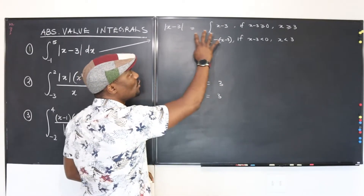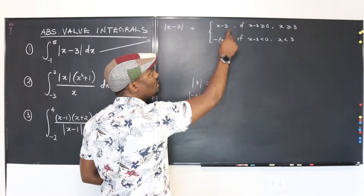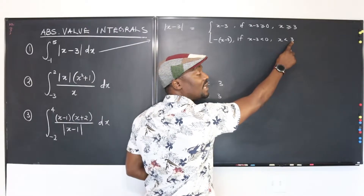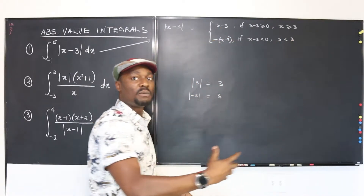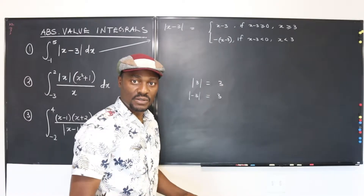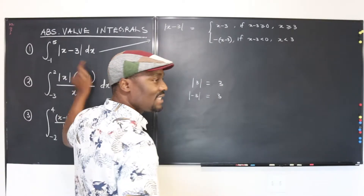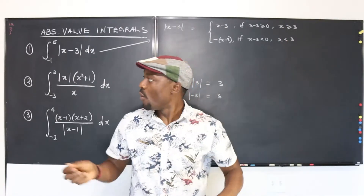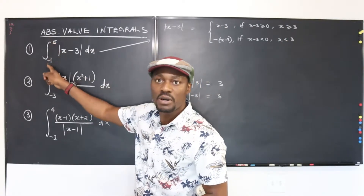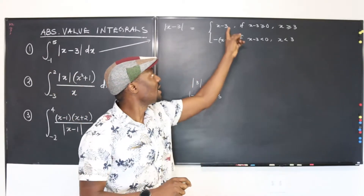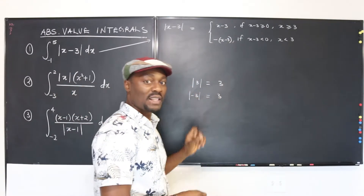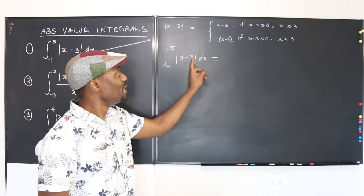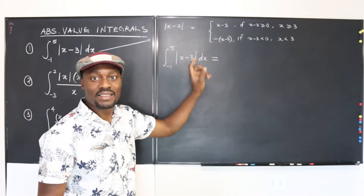Now that we've established the two functions involved — one activated below x equals 3, the other for the positive portions — let's rewrite this integral in terms of these two. We split at x equals 3 because we need to know which parts of the upper and lower limits apply to either case. Let me rewrite the function now.